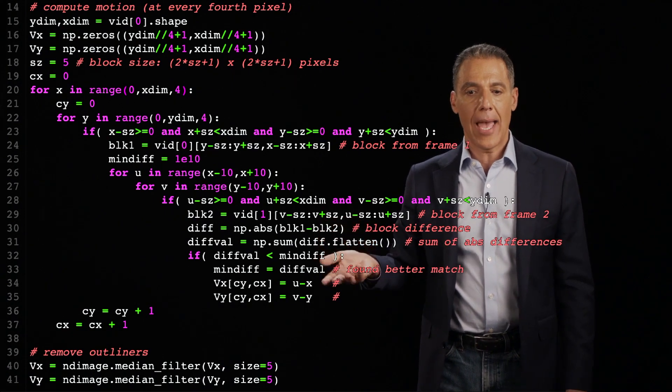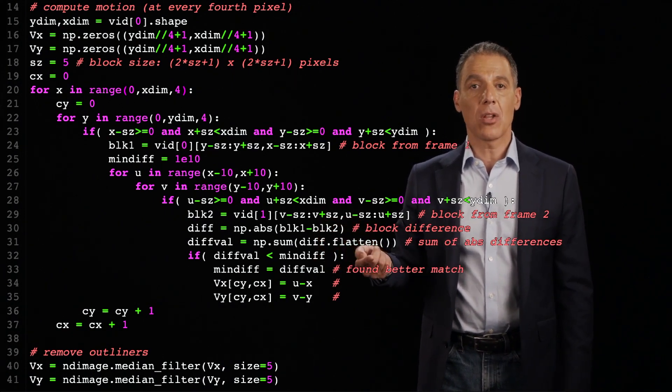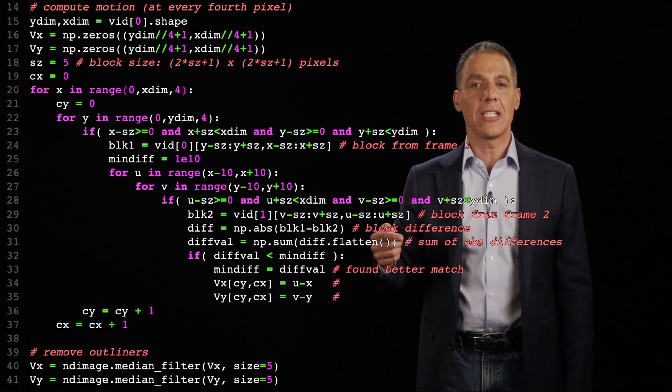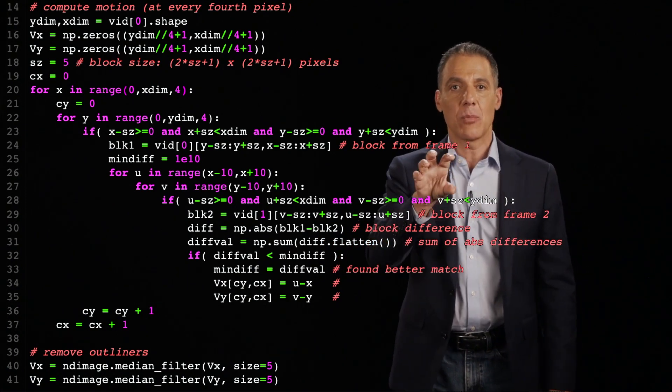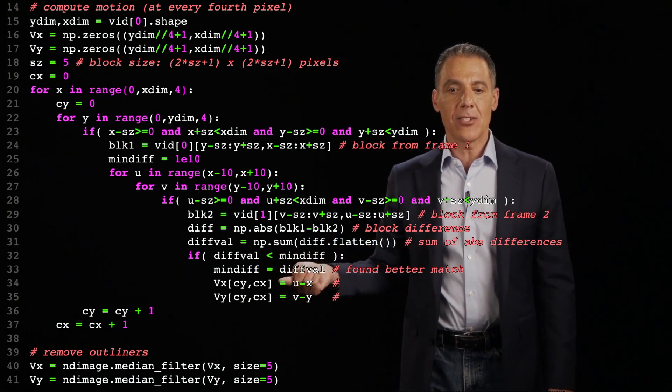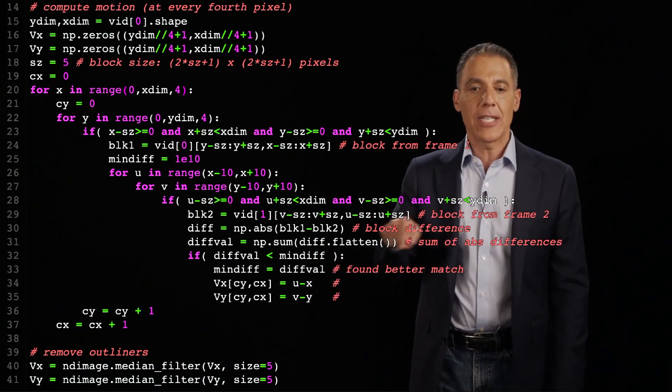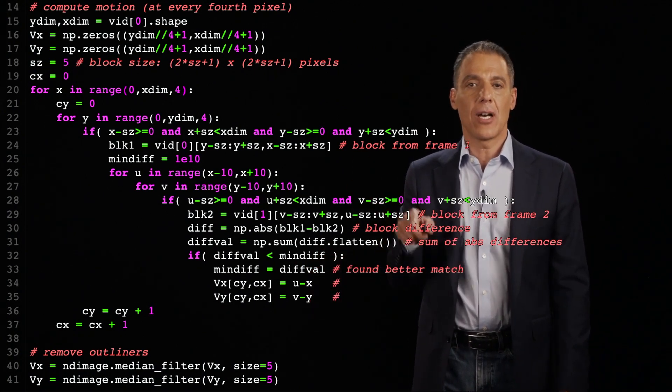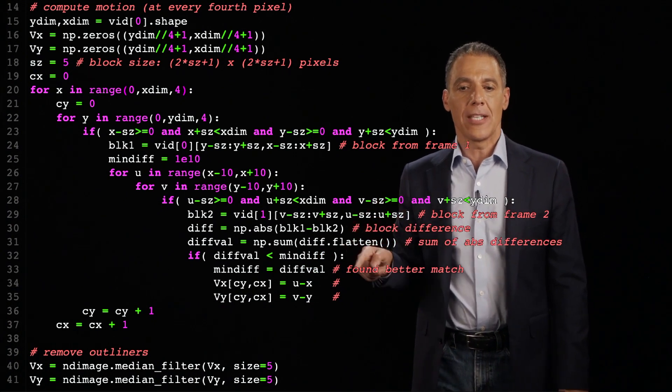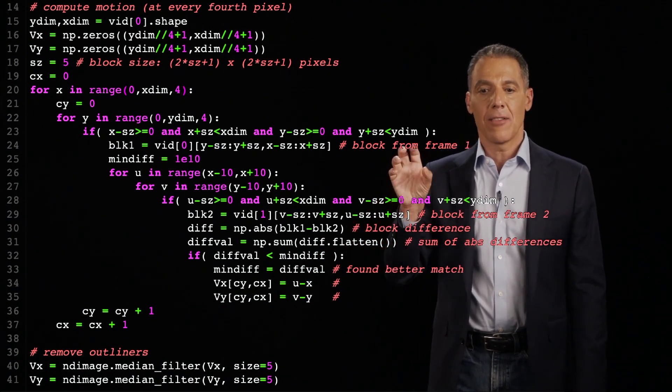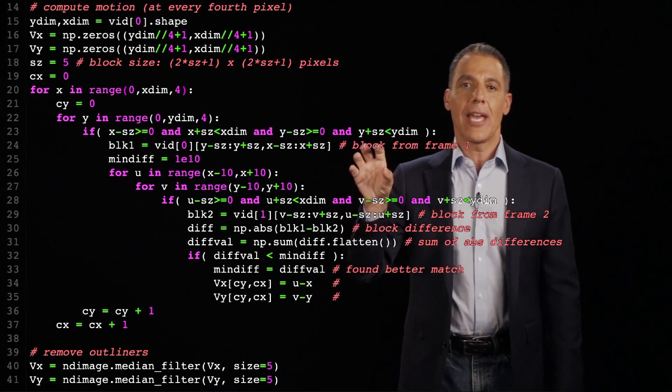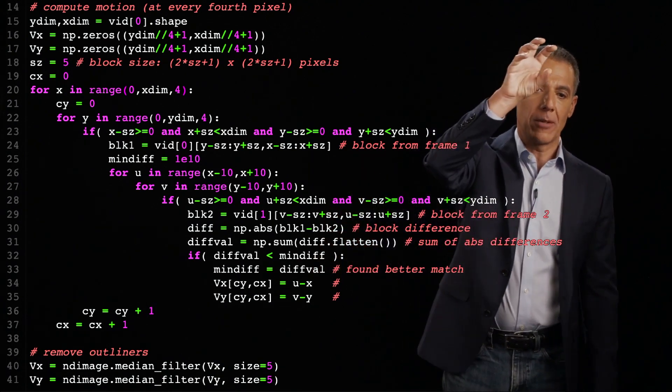I'm going to ask, is that smaller than the minimum difference that I've seen yet? I'm trying to find the patch that is most similar. And if it is, then I've got a new min. That's my velocity. And I keep iterating here inside these two nested for loops until I find the block that matches the closest in frame two from frame one.